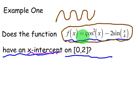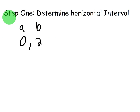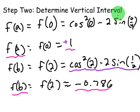So let's look at an example. We have f(x) = cosine squared of x minus 2 sine of x over 4. Does this have an x-intercept on the interval 0 to 2? Well, this is an existence theorem, and this question is asking for the existence of an x-intercept. What we need for the Intermediate Value Theorem to work is a horizontal interval and a vertical interval. Since we have x-values, we can plug them into the function to figure out the corresponding y-values. The first step is to confirm the horizontal interval — in this case it's from 0 to 2. Step 2 is to determine the vertical interval by plugging in your first value, f(0). Cosine squared of 0 gives you 1, and sine of 0 is 0, so f(0) = 1.